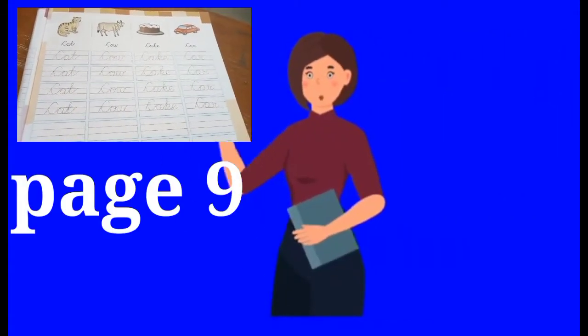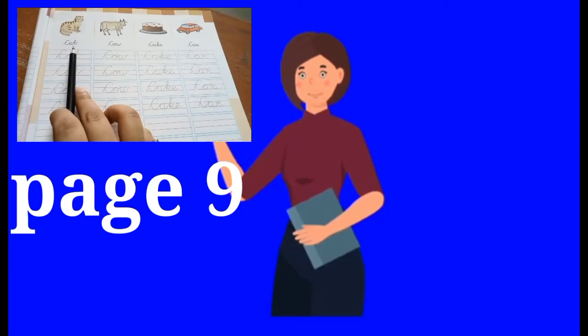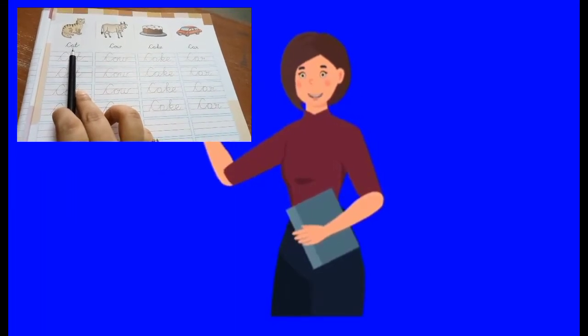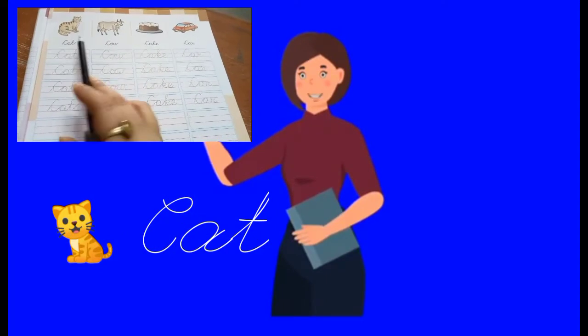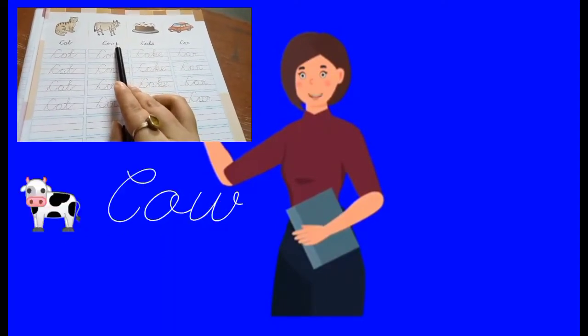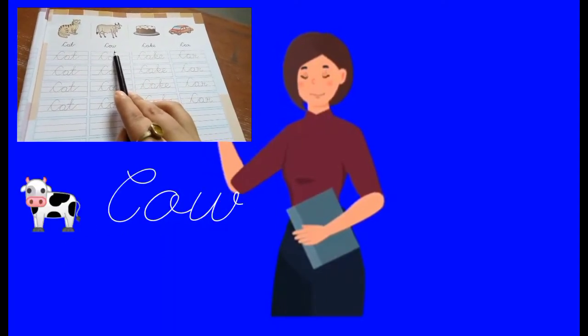So this is the page we are going to do today. Let's see the words. This is a picture of a cat, C-A-T, cat. This is a picture of cow, C-O-W, cow.